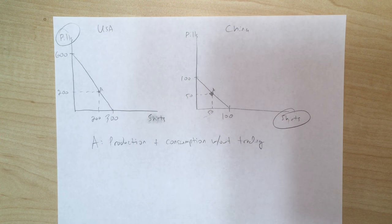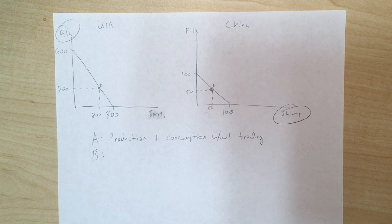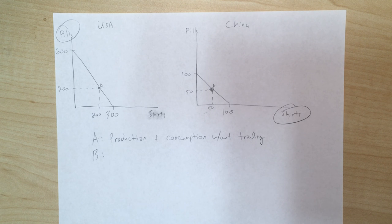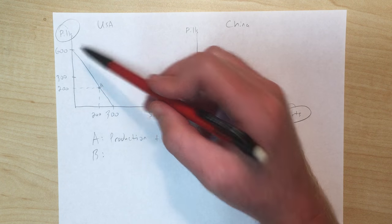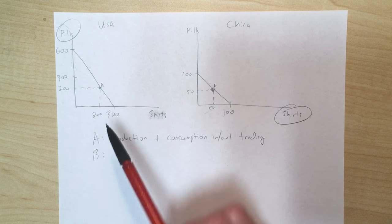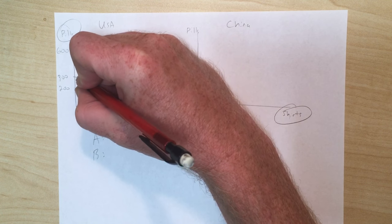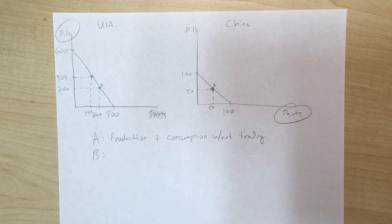Just like last time, point A means production and consumption if they don't do any trading. We want to see if we can do better than that. So what do we do next? We need to specialize. In this case, the US might partially specialize — maybe producing 300 pills. If they produced 600 pills, the most shirts China can produce is only 100, which probably isn't enough to satisfy US consumers. So the US partially specializes, producing 300 pills and 150 shirts.